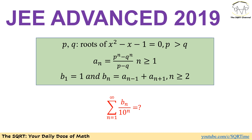This is a rather complicated problem. We have an equation, a quadratic one: x squared minus x minus 1 equals to 0. We have P and Q as roots of this quadratic equation, and we know that P is greater than Q. We are given a sequence aₙ defined as P to the power of n minus Q to the power of n, over P minus Q, for n greater than or equal to 1. We also have another sequence Bₙ defined as aₙ₋₁ plus aₙ₊₁, for n greater than or equal to 2, and B₁ equals 1.